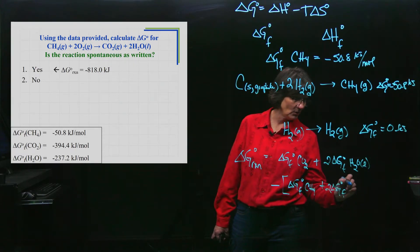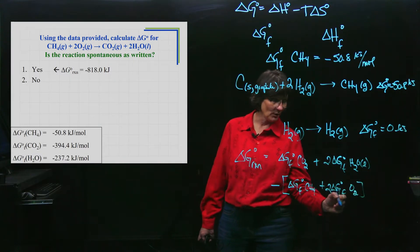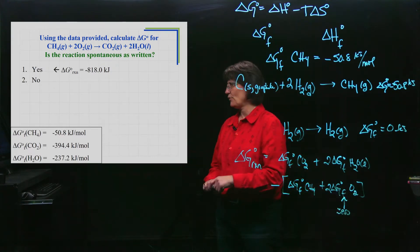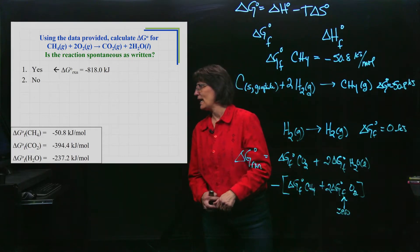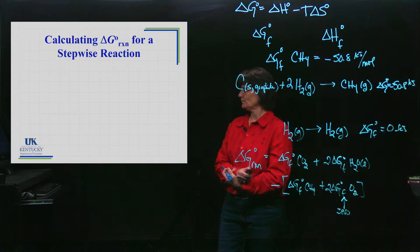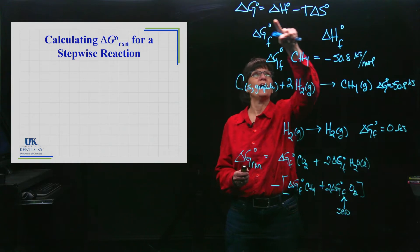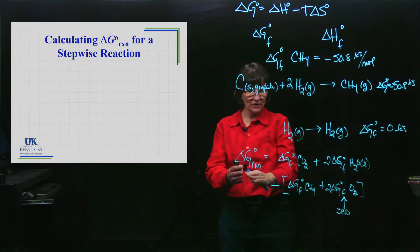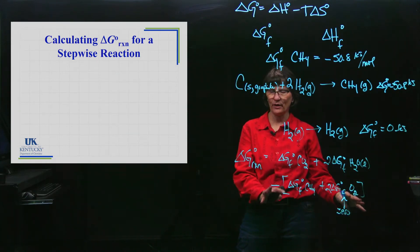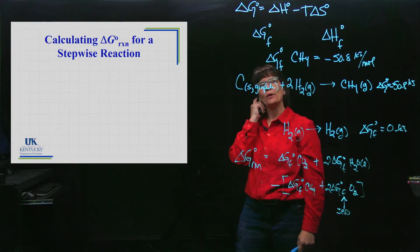Then you are going to subtract both the Delta G of formation of methane and the Delta G of formation of oxygen times two. Notice I didn't give you that value because it's zero. Put that in your calculator correctly and it will give you negative 818 kilojoules. Now we have this way of calculating Delta G using the summation: adding up all the products and the reactants and putting it together like this. You could also determine the Delta G of a reaction using a stepwise process.